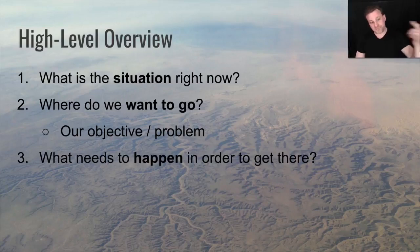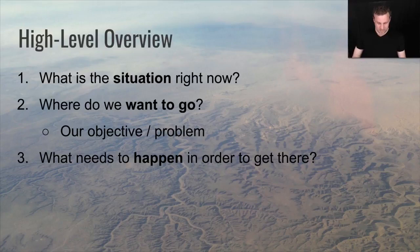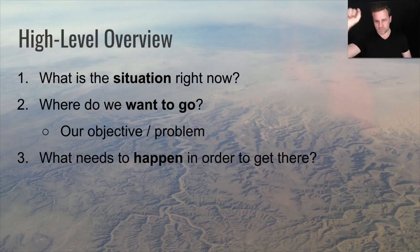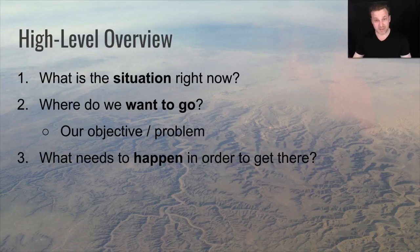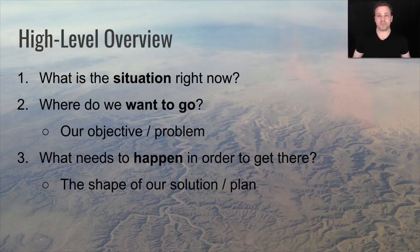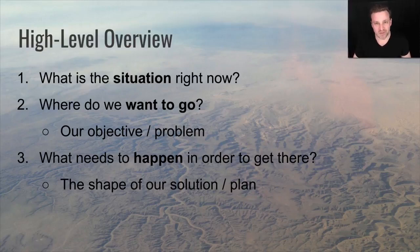The third step is going to be: what needs to happen in order to get there? If we're here and the thing that we want is over there — what are the steps, what do we need to cross, what's the first thing that needs to happen, what's the second? Very, very simple. That gives us the shape of the solution, or the plan — in other words, our strategy. But you can't jump to step three. You can't figure out how to get there from here if you don't know where here is and you don't know where there is.